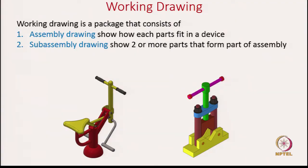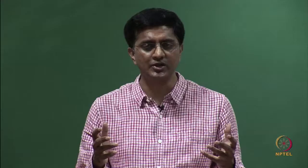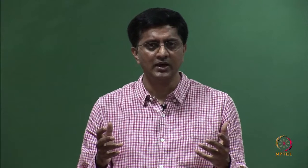We also show subassembly drawings. The examples we have seen might look relatively simple because they are composed of just 8 to 10 parts, but let us think of a car — a car is also a device and it has thousands of parts. So how do we show all of them in one assembly drawing? It is hard to see.